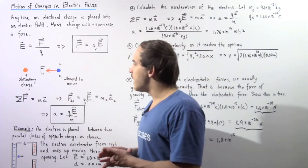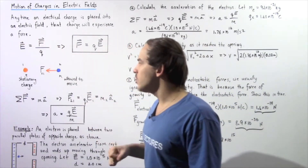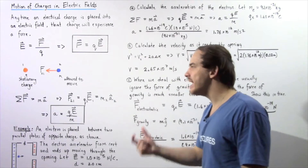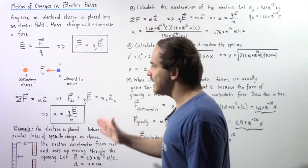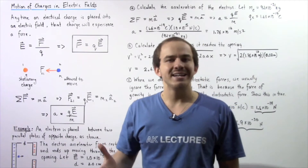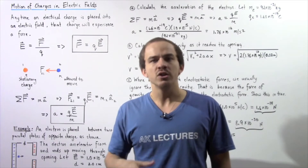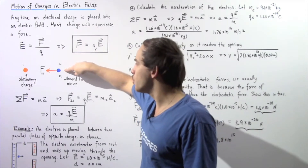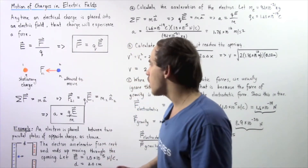Let's look at the following scenario. Suppose we have two point charges: point charge one, which is a positive and stationary point charge, and point charge two, which is a negative point charge that is allowed to move. Point charge one creates an electric field E1, and this field exerts a force that pulls on point charge two in the direction toward charge one, because these charges are opposite.